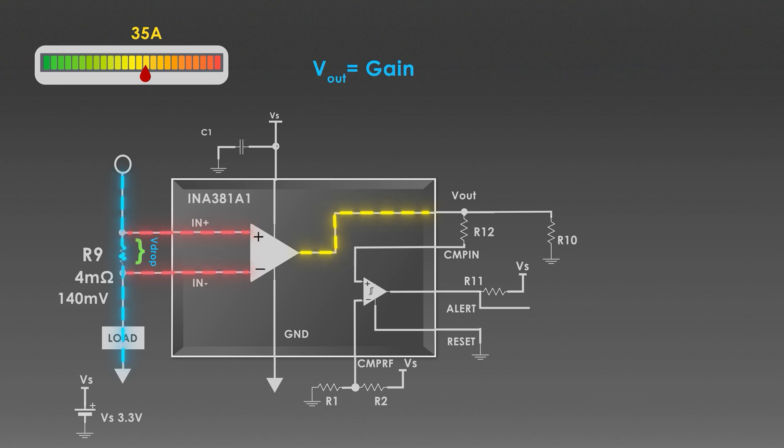Gain of the amplifier is 20. So, when the current is 35 Amperes, then the output voltage from the amplifier will be 2.8 volts. And that's where we need to detect our current and report it.